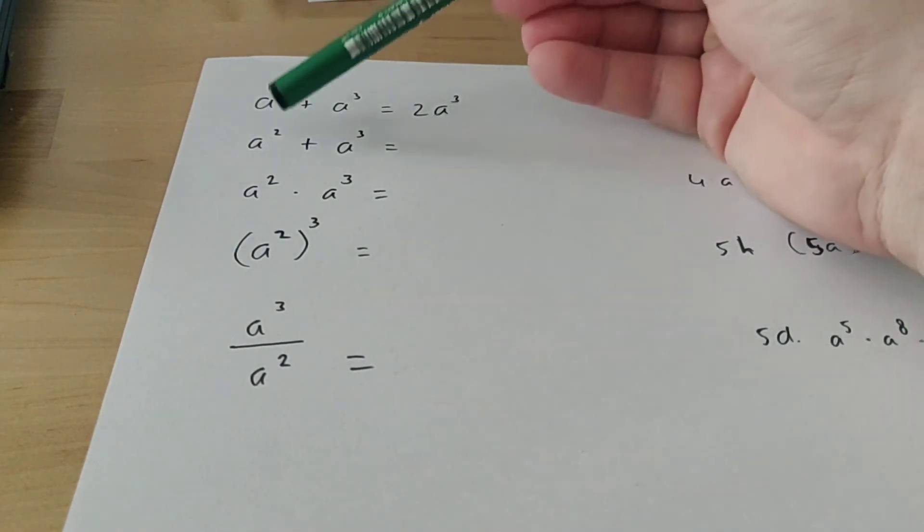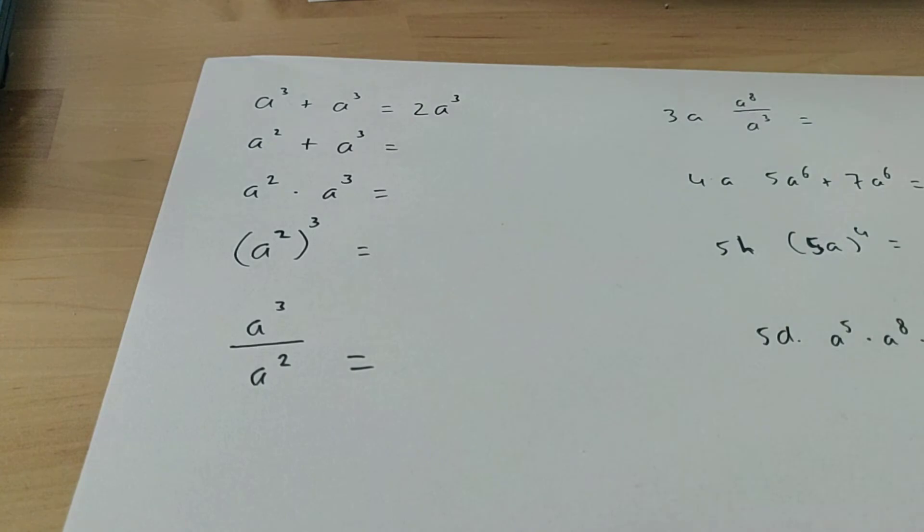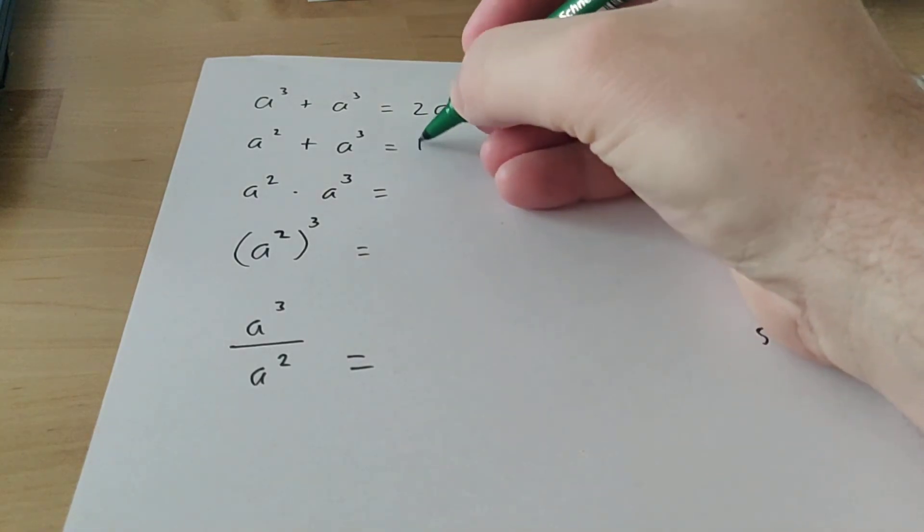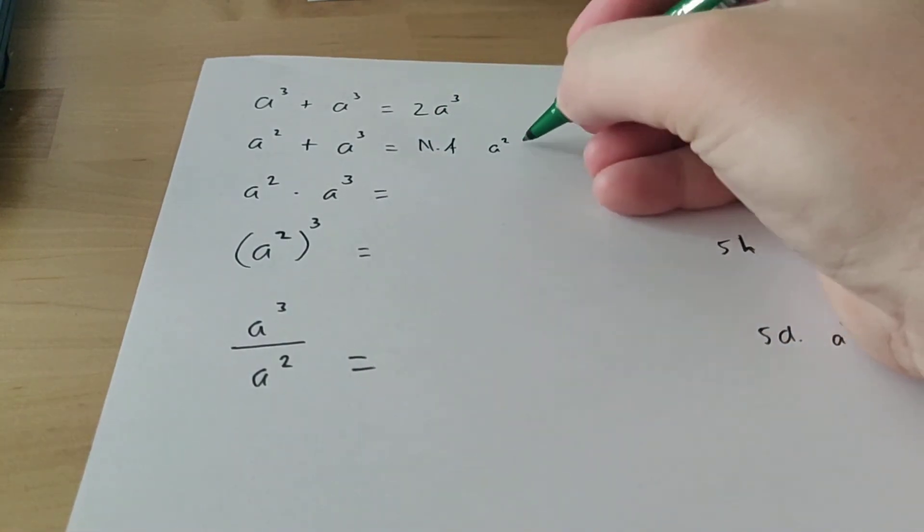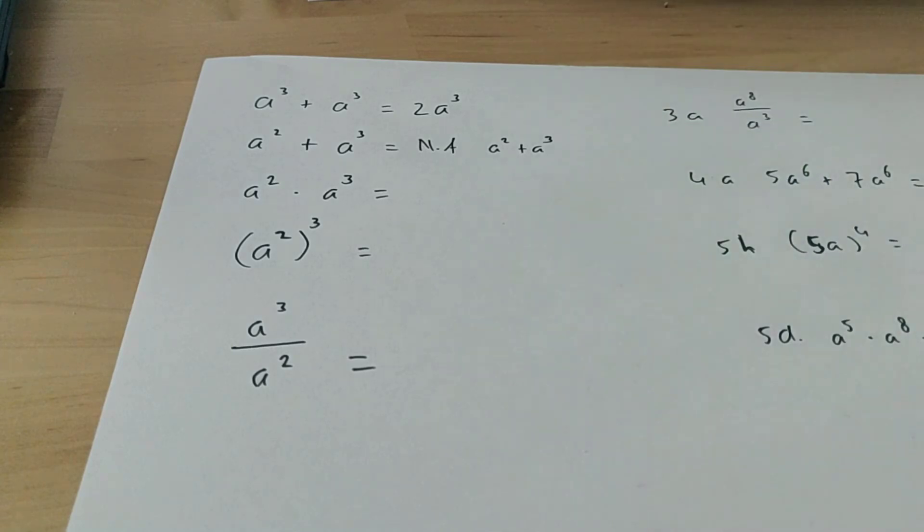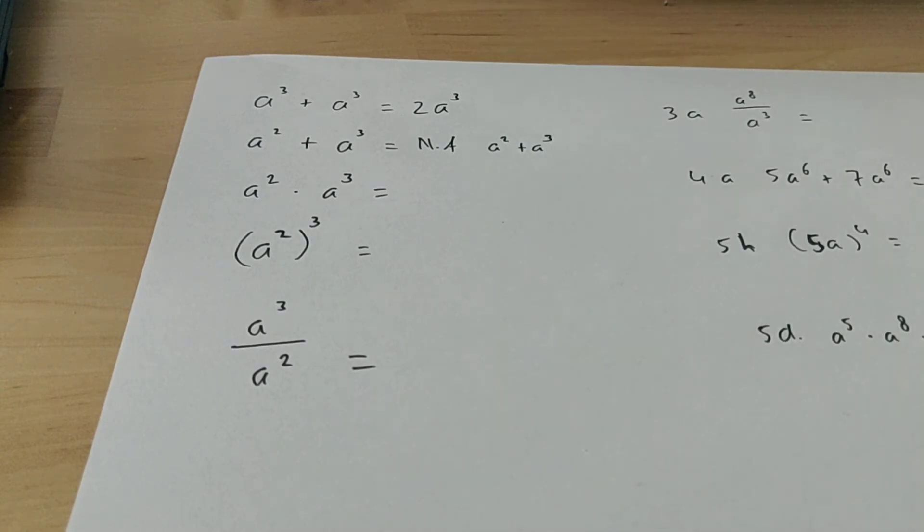If the powers are different, here there's a 2 and there there's a 3, then you cannot add them. So if you have a to the power of 2 plus a to the power of 3, you can write down no answer. Or you can write down a squared plus a to the power of 3. The question is always simplify, and simplify means make as small as possible. And this is as small as possible as you can make it.